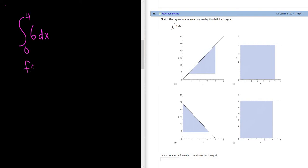So our function here is f(x) = 6. So this is a horizontal line. You can think of it as y = 6. So let's go ahead and do our graph.